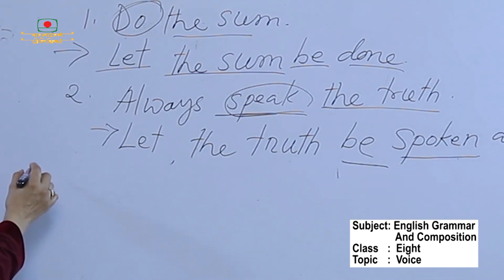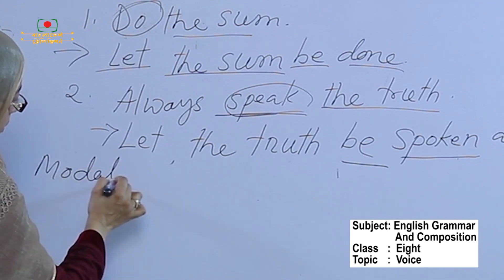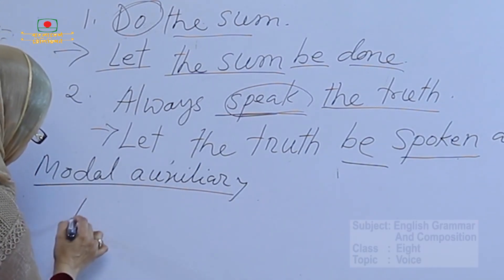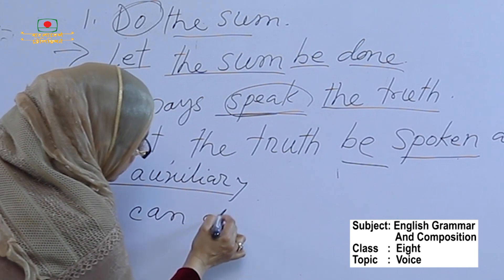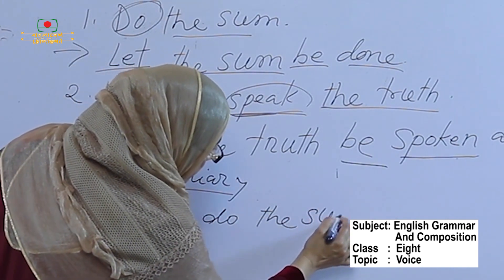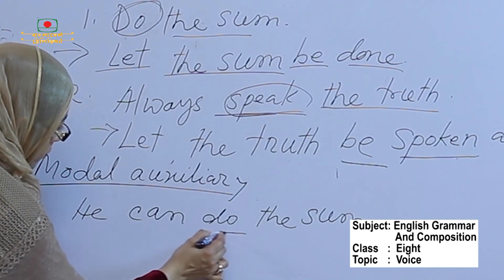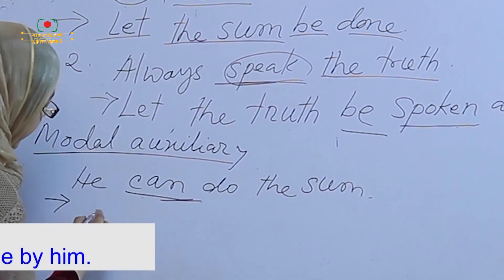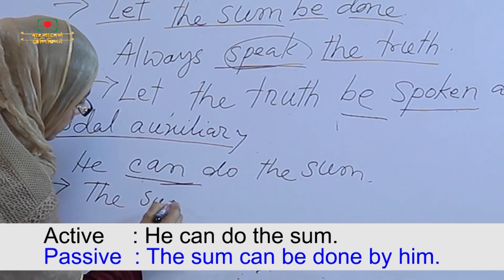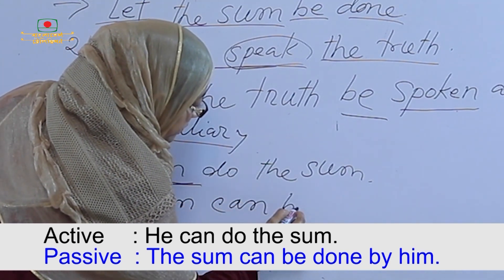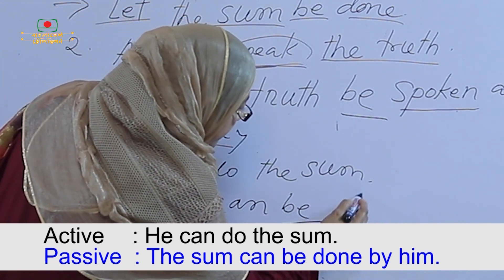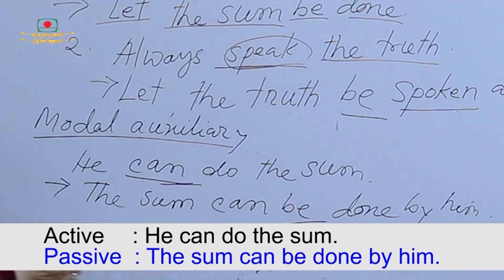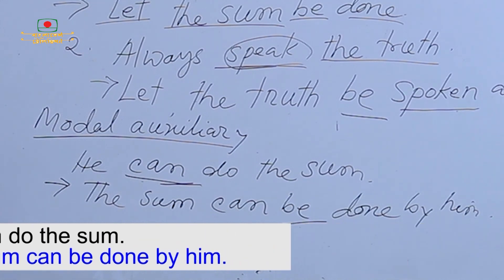Now we see some other examples using modal auxiliaries. 'He can do the sum' — here we use the modal auxiliary 'can'. When we turn it into passive, we write: 'the sum can be done by him'. We only use the 'be' verb after the modal auxiliary.